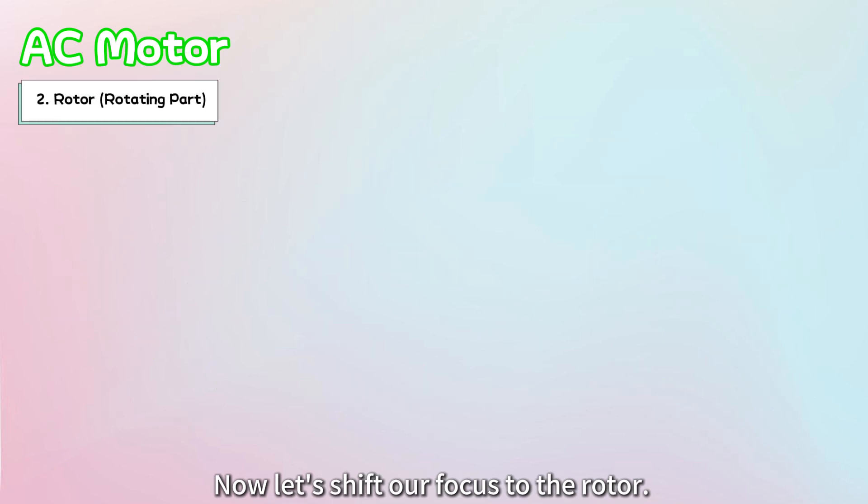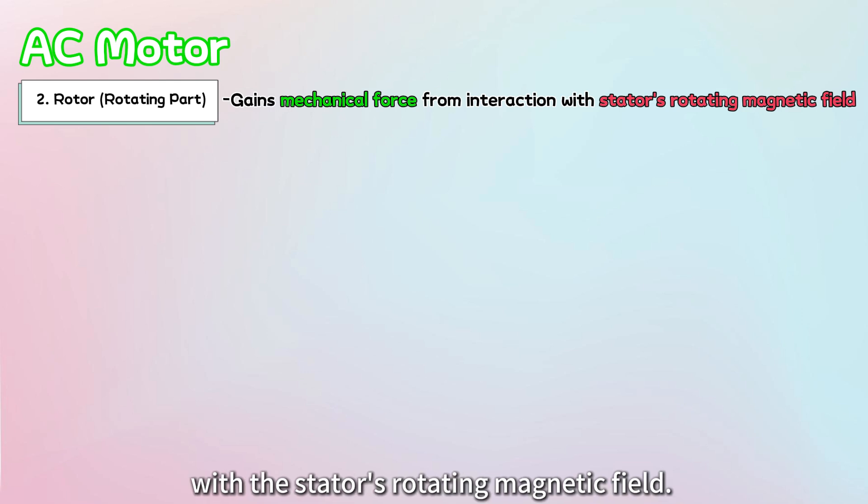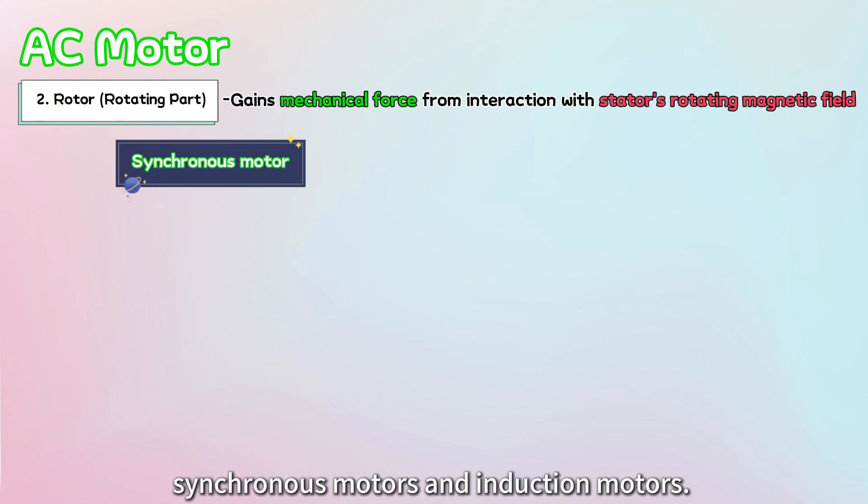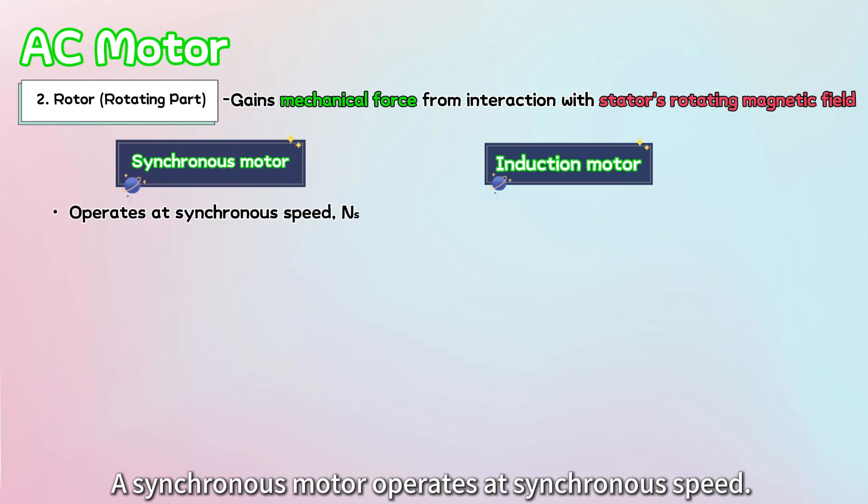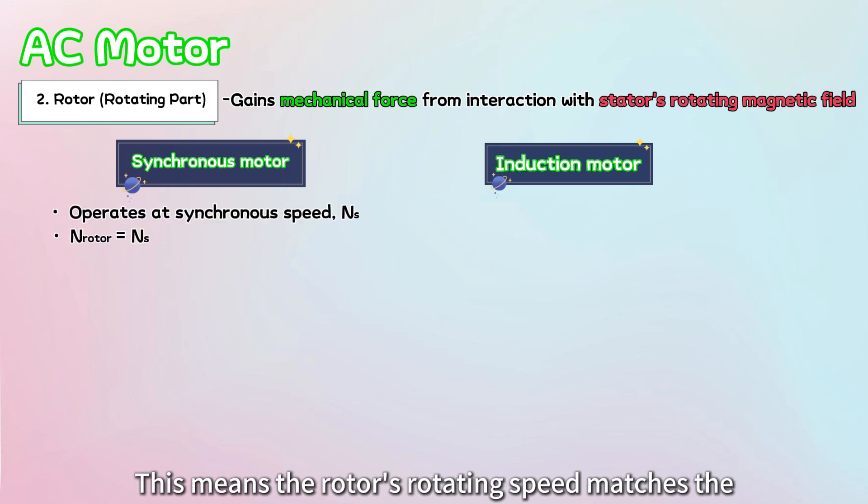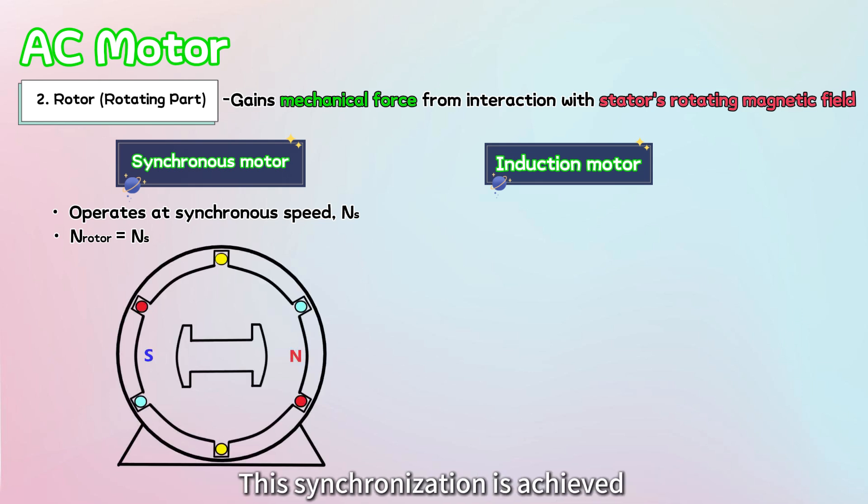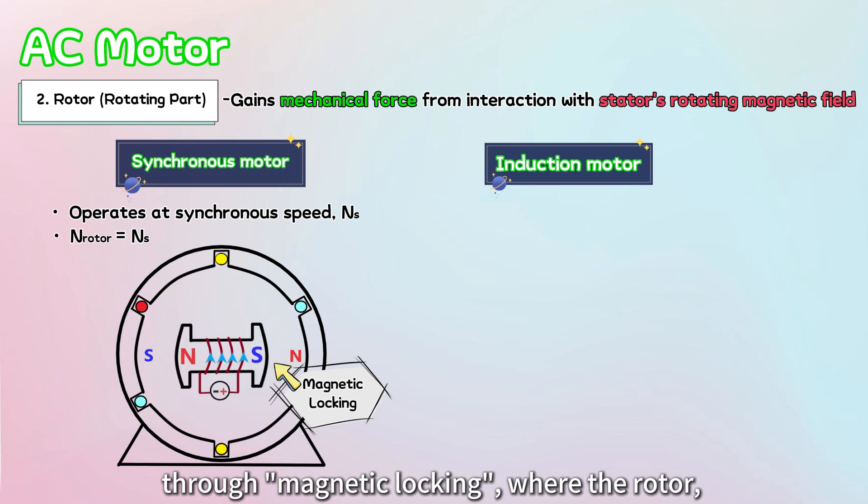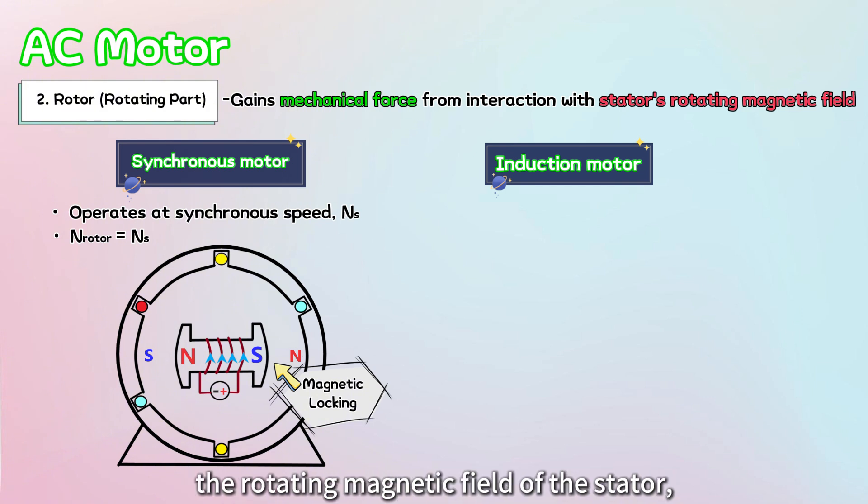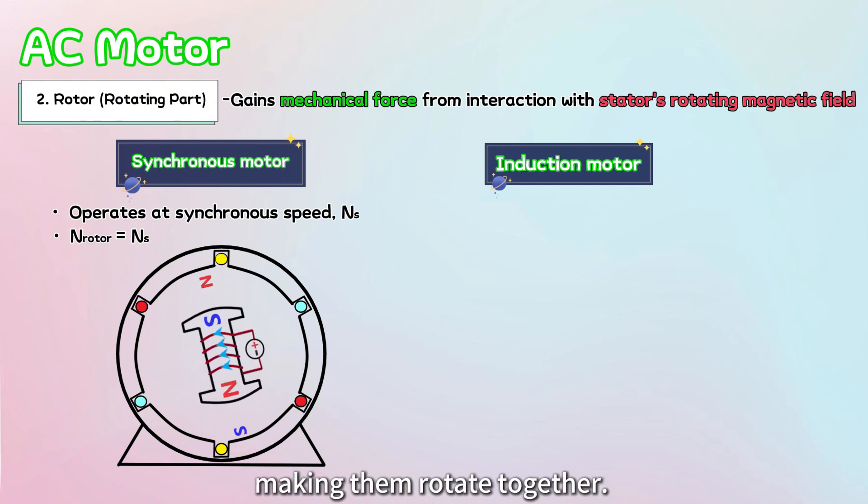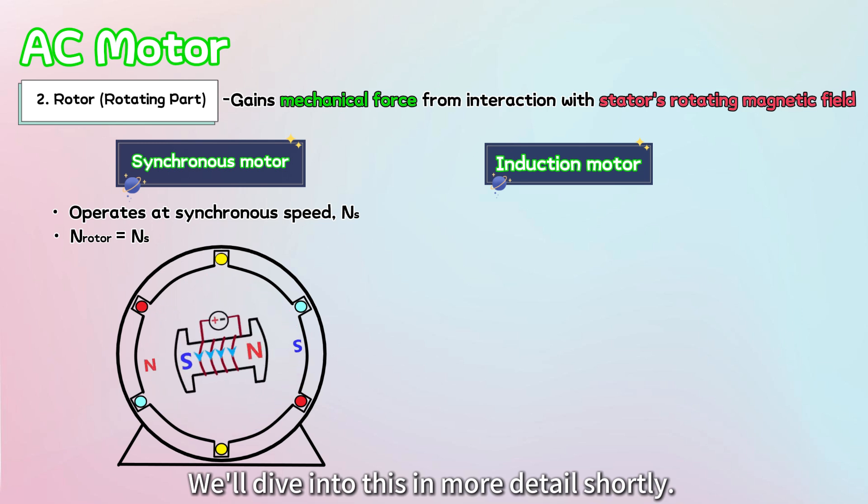Now let's shift our focus to the rotor. The rotor attached to the motor's shaft is what actually moves and rotates. It gains mechanical force from the interaction with the stator's rotating magnetic field. There are two main types of AC motors, synchronous motors and induction motors. A synchronous motor operates at synchronous speed. This means the rotor's rotating speed matches the speed of the stator's rotating magnetic field. This synchronization is achieved through magnetic locking, where the rotor, acting as an electromagnet, is attracted to the rotating magnetic field of the stator, making them rotate together.